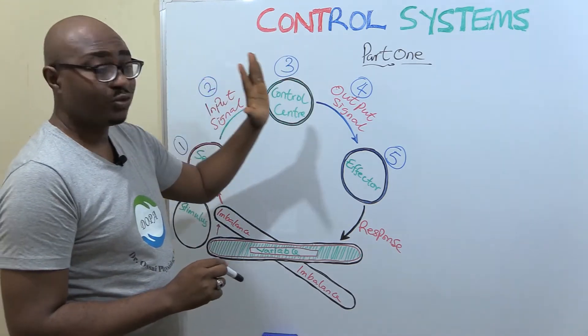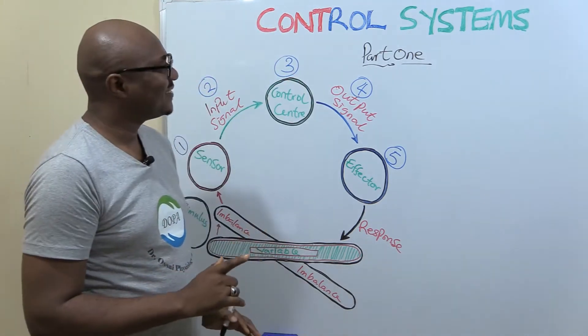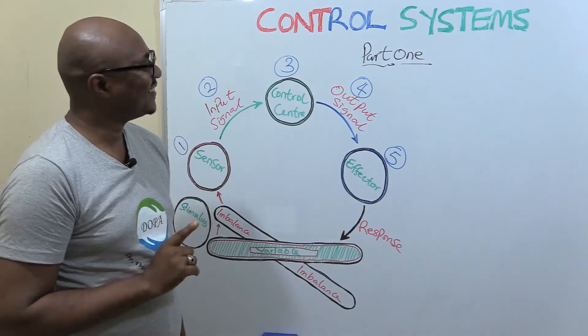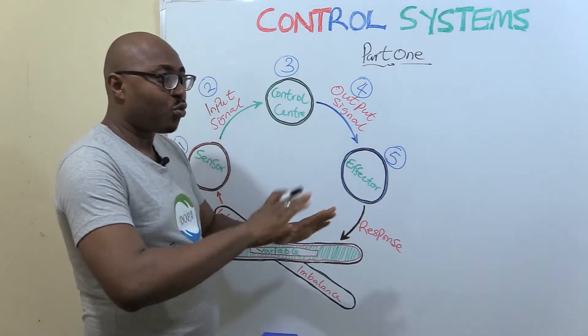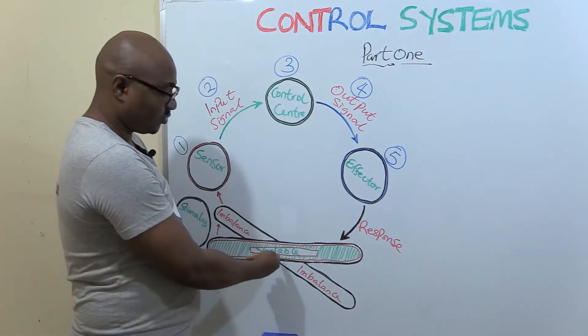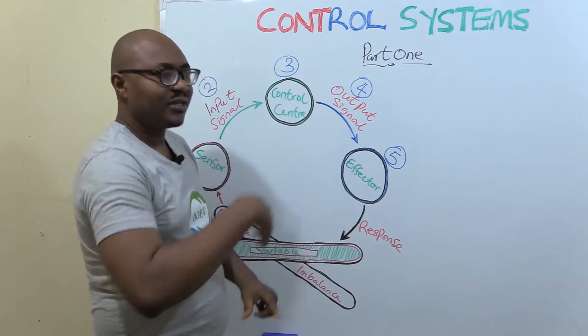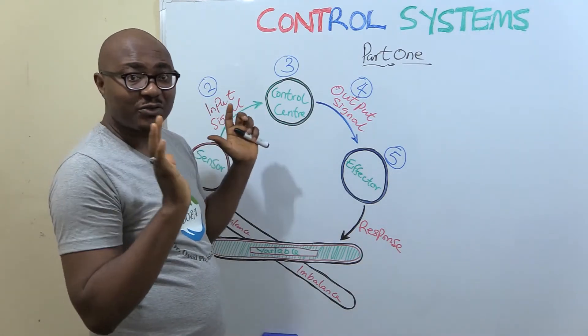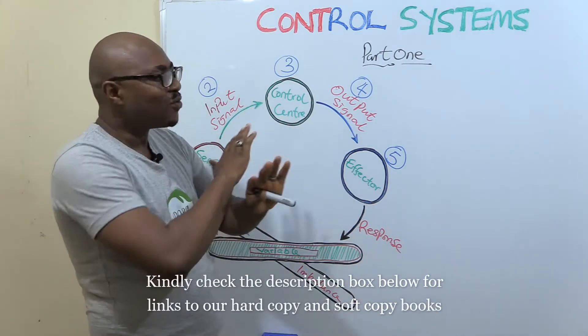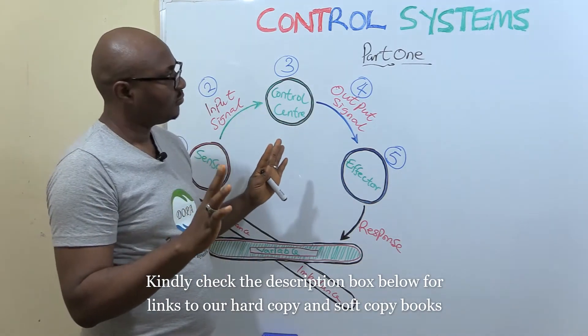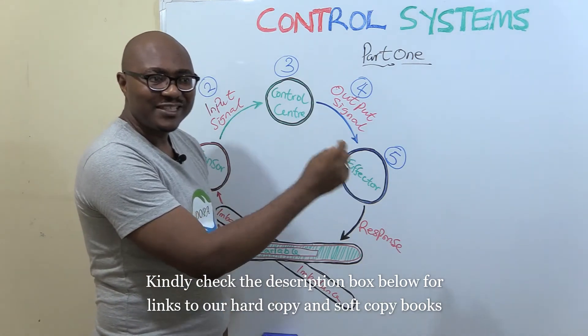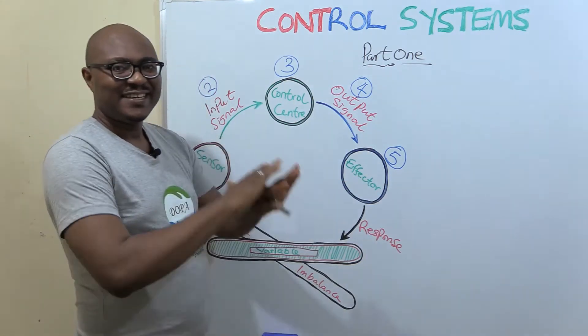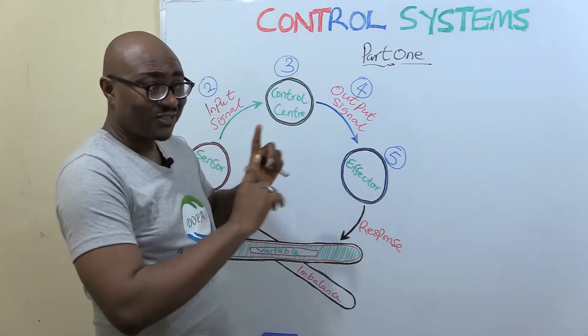Now we're dealing with control systems. The body is a control freak - it wants to control thousands of physiological variables: temperature, pH, glucose level, blood pressure, water content, different electrolytes - wants to control everything. But the control is in order to achieve stability in the internal environment, which is what homeostasis is all about, that we talked about in the previous lecture.